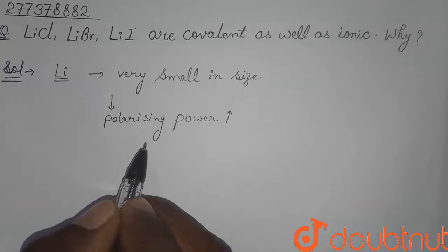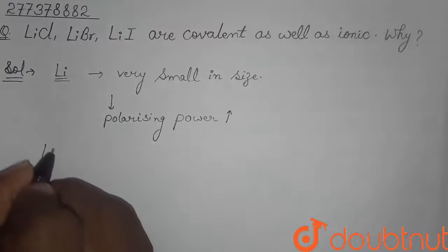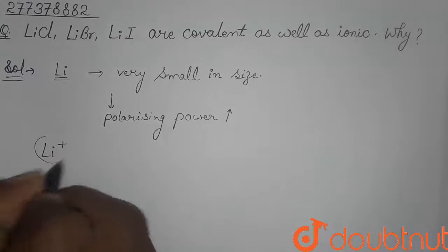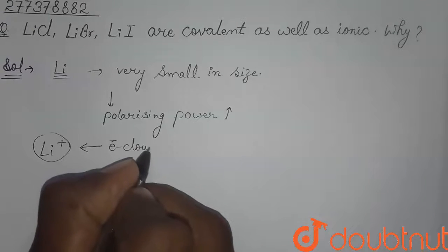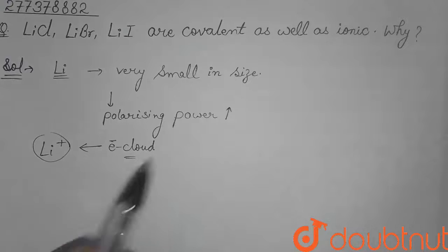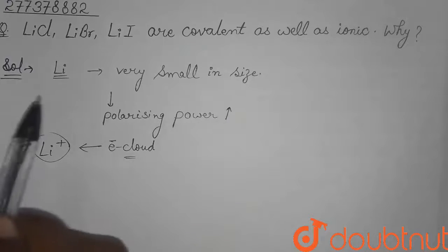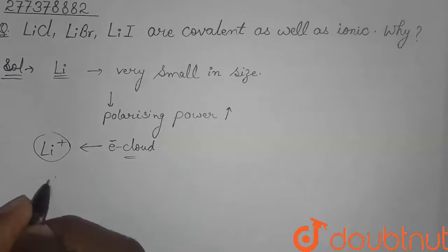So what is polarizing power first? The ability of a cation to attract electron cloud towards itself is known as polarizing power. So suppose that it is a lithium ion, and the electron cloud is attracting towards the lithium plus ion. This ability of the lithium plus ion to attract the electron cloud is known as polarizing power. Due to this reason — the very small atomic size of lithium — lithium chloride, lithium bromide and lithium iodide are covalent.